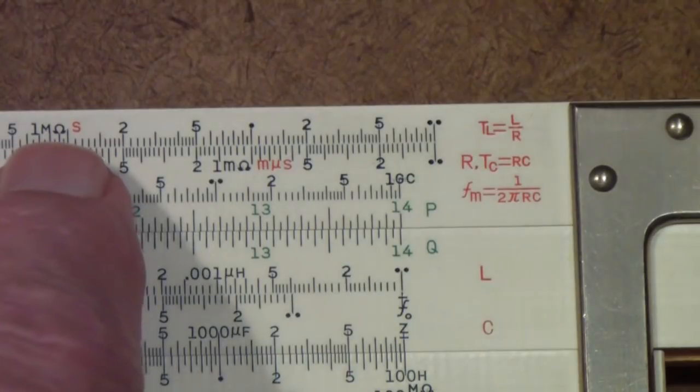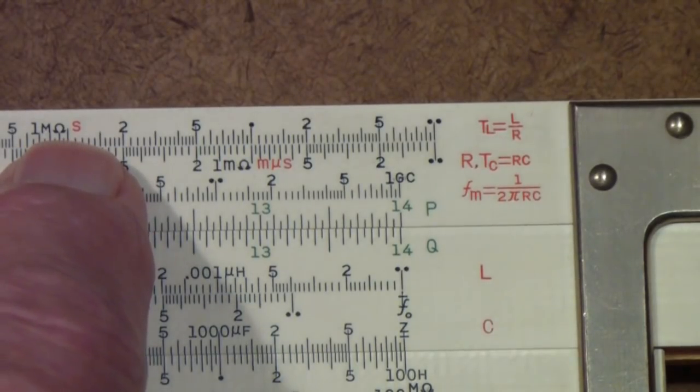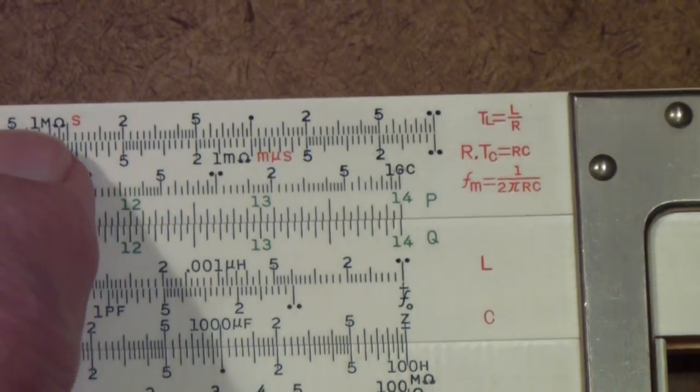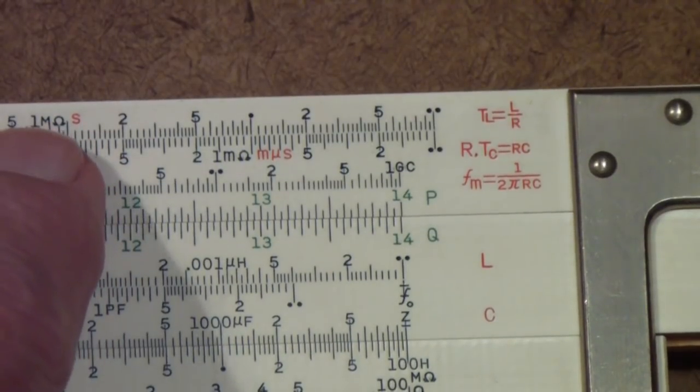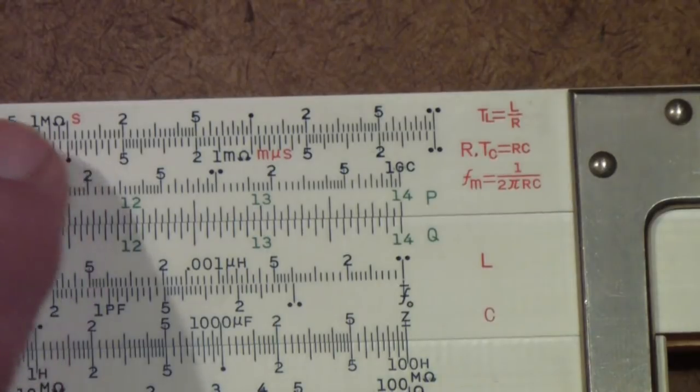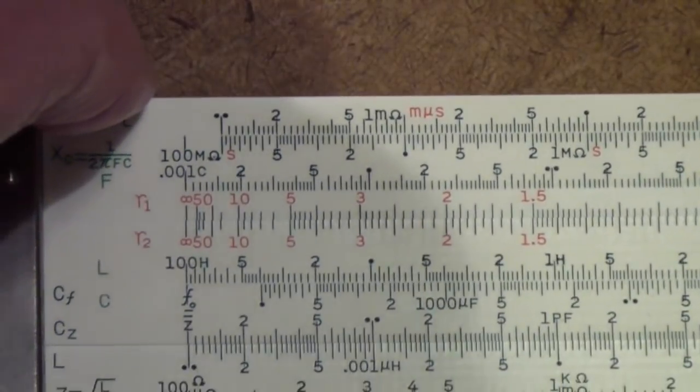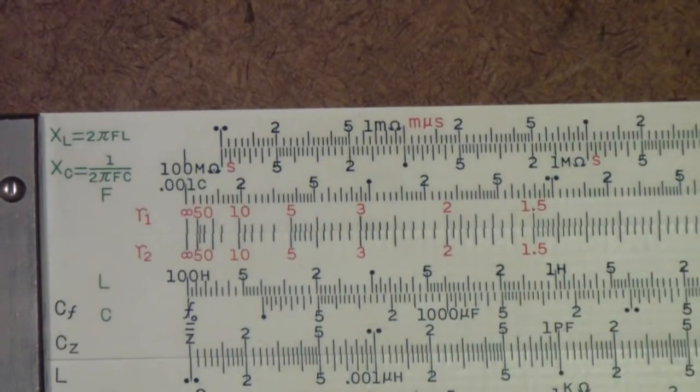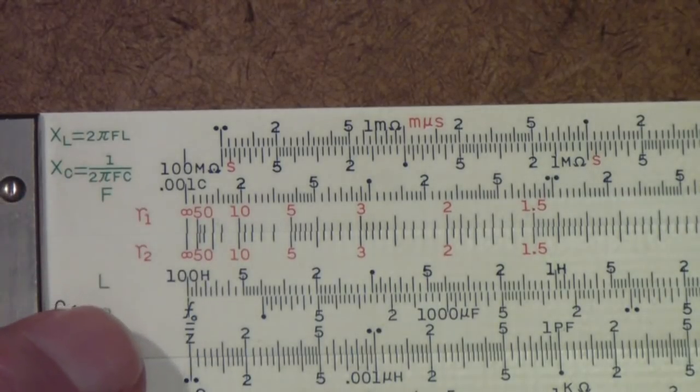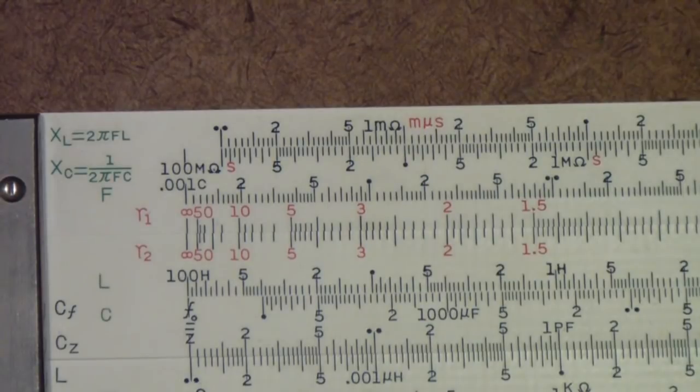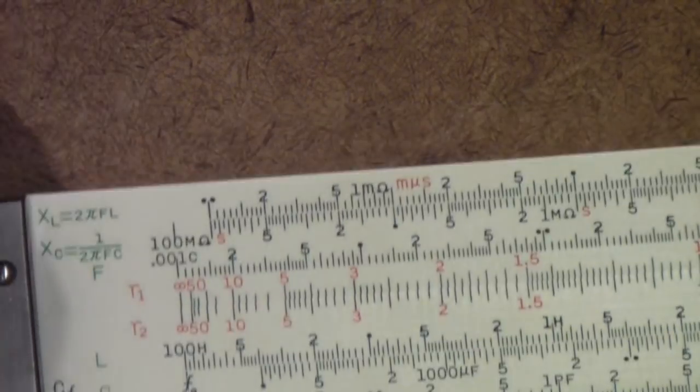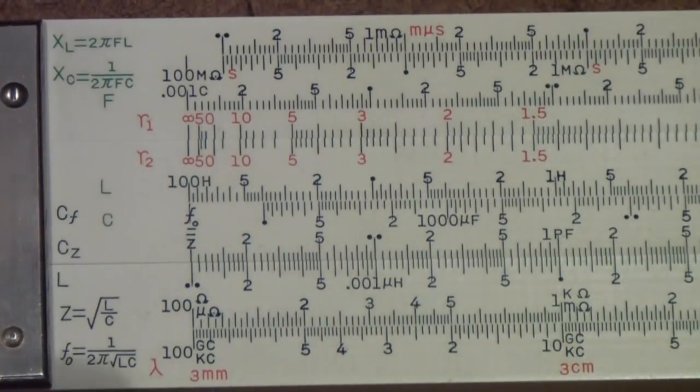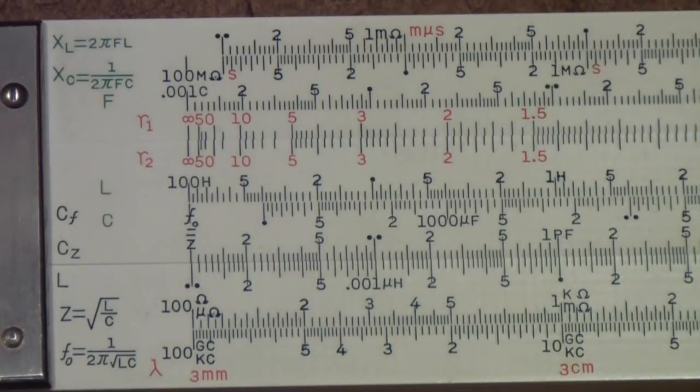This would be one second red on the top scale. It would also be one megaohm red on the impedance scale. The time constants in general are red on the red scales. And then, of course, there is a scale for inductance and a scale for capacity there.